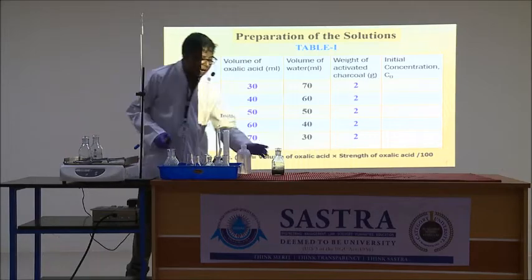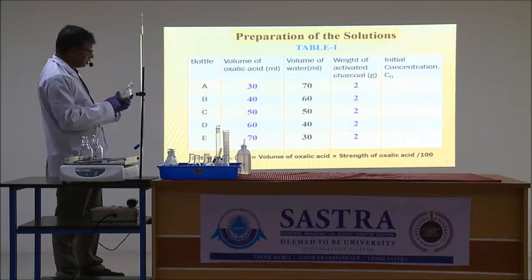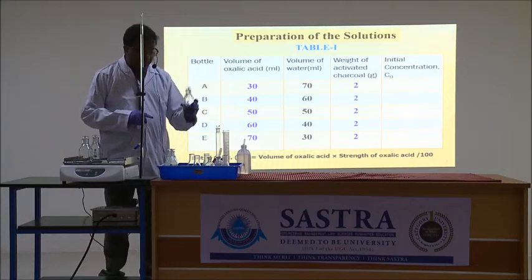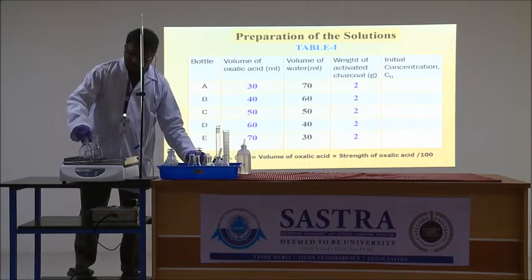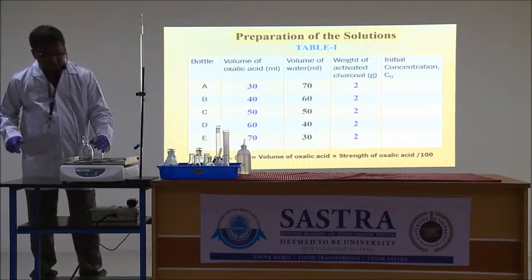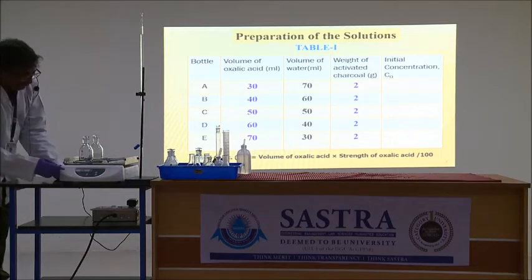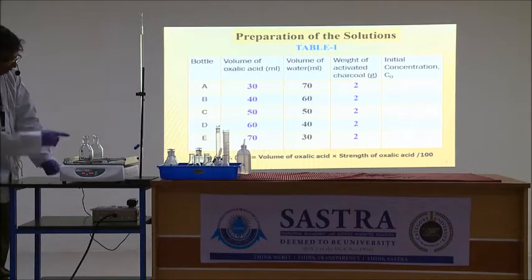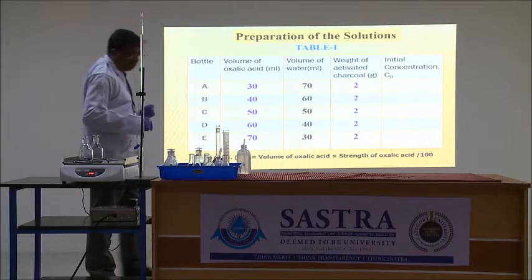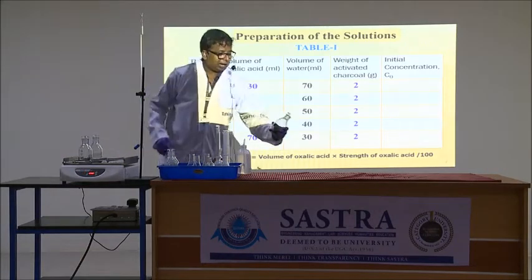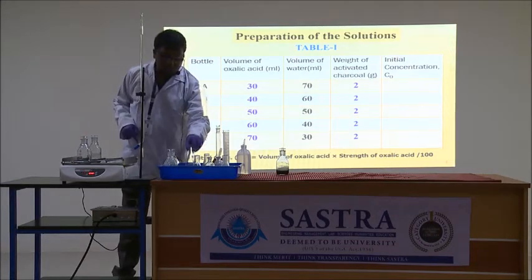We are adding some charcoal to each solution — I have already done that here. After that, we keep the bottles in the mechanical shaker. We check whether they are properly set, set the time, and the shaker will rotate for 30 minutes. After the shaking is complete, we keep the solutions for equilibration, and after that we filter each solution into conical flasks.